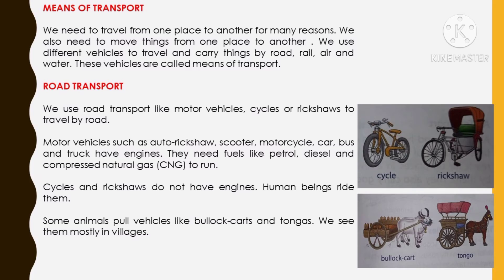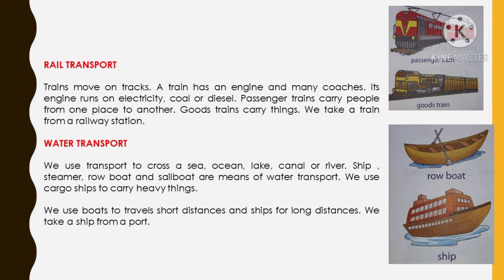Now let us see about rail transport. Trains move on tracks — they need long tracks to run on. A train has an engine and many coaches, with compartments for passengers. There is one big engine in front and one behind the train to pull it. The engine runs on electricity.